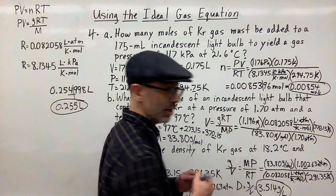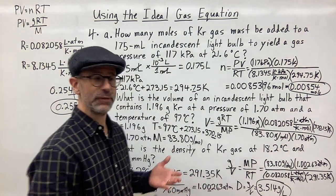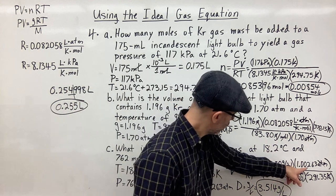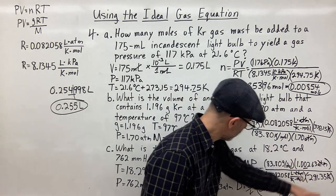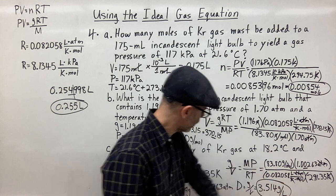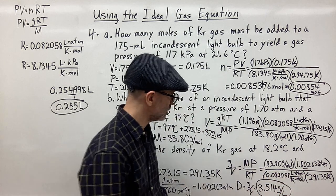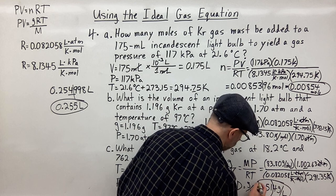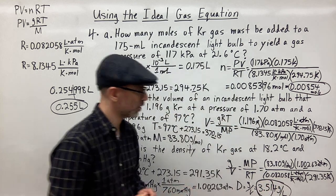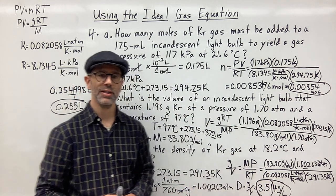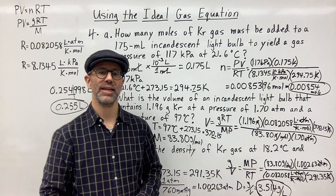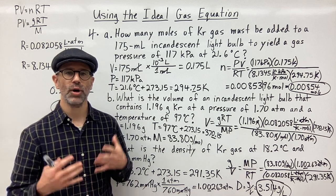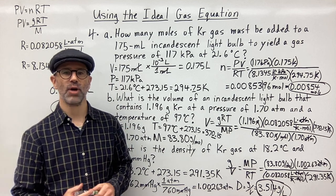For sig figs we have four, three, five, four, and five — so the least is three sig figs. Rounding to three sig figs gives a final answer of 3.51 grams per liter. And that is how you use the ideal gas equation to solve gas problems.